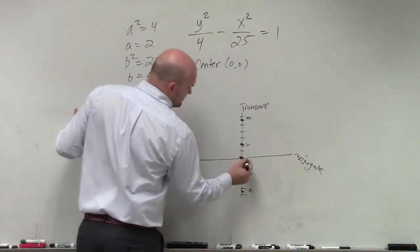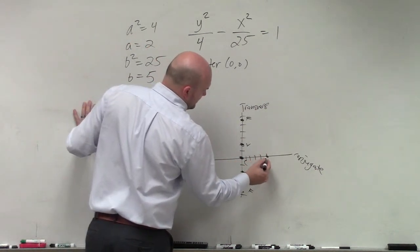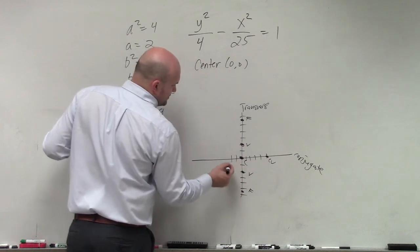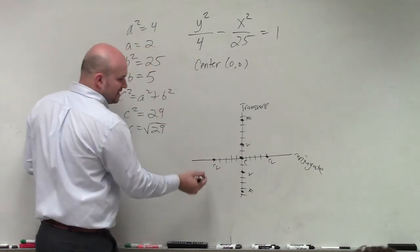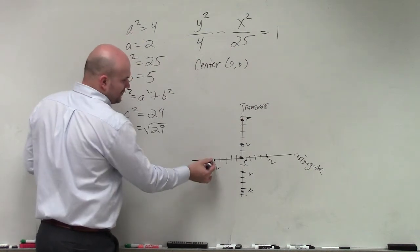So B in this case is 5. So we do 1, 2, 3, 4, 5. That's my co-vertice. 1, 2, 3, 4, 5. That's my co-vertice. So because, again, remember what I told you is you can use your co-vertices.